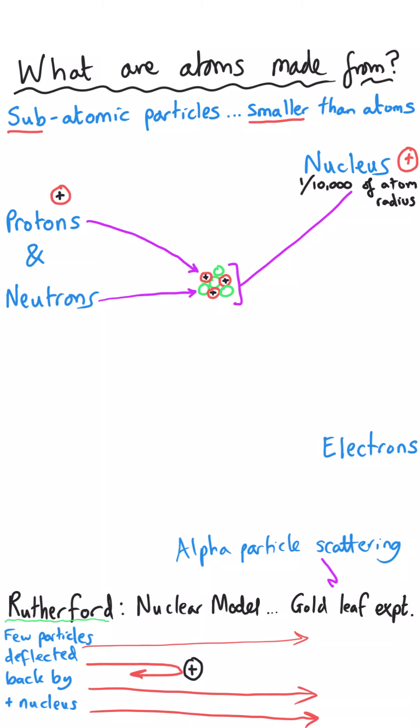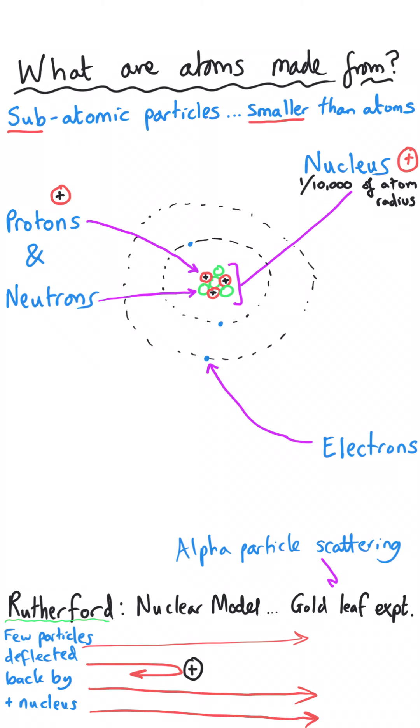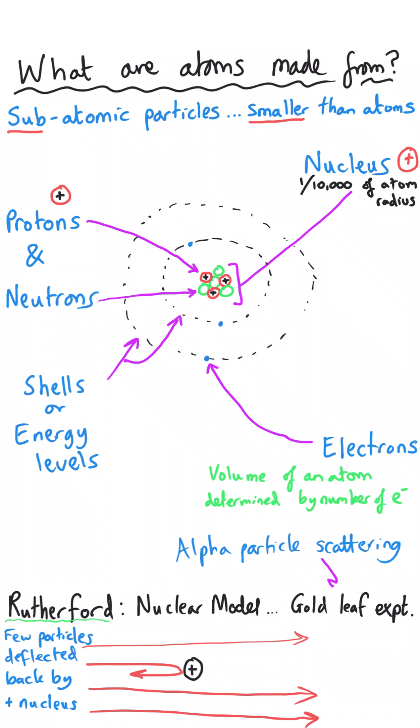The electrons orbit that nucleus in shells, but we can call them energy levels — that's a slightly more technical term. The electrons are much, much smaller and they have much less mass than the neutrons and the protons. These electrons will vary in number depending on what the atom is, so the space and the volume that these electrons occupy will also vary depending on how big or small the atom is and how many of these particles they have.